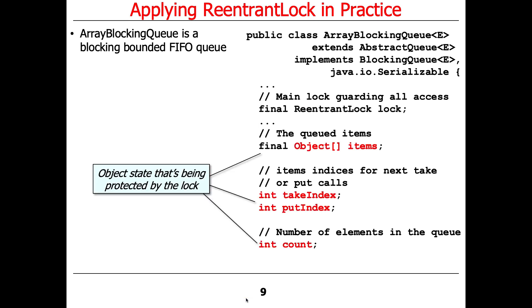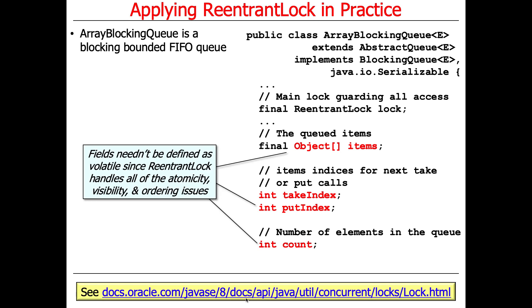Here are the fields themselves: we have the array that stores the items in the queue, indices that track where the next item goes to put it in or take it out — the put and take index — and we keep track of the number of items as a count. These fields don't have to be defined as volatile because they're protected by this ReentrantLock, so defining them as volatile would be completely pointless.